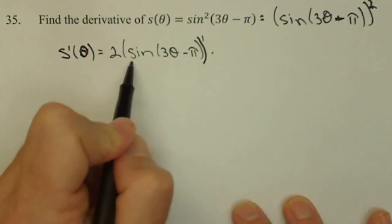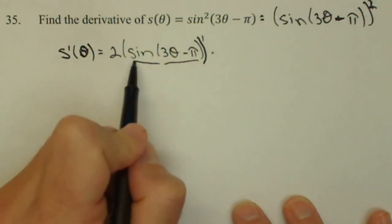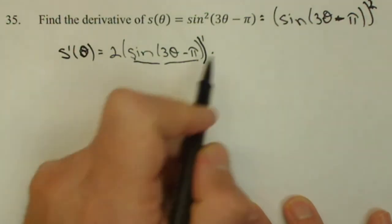Times, now the derivative of this guy here. Derivative of the inside. Derivative of sine is cosine.